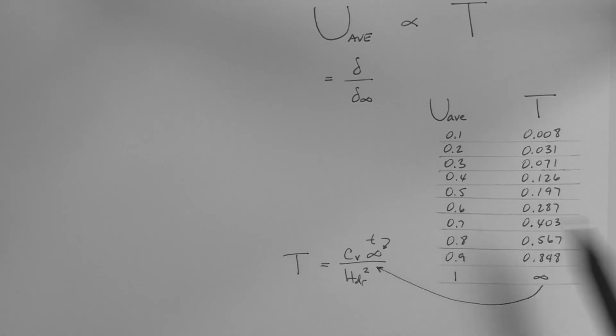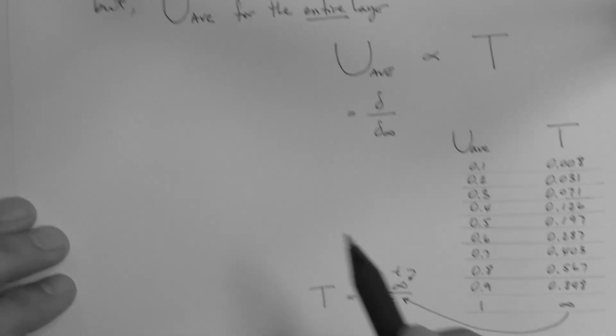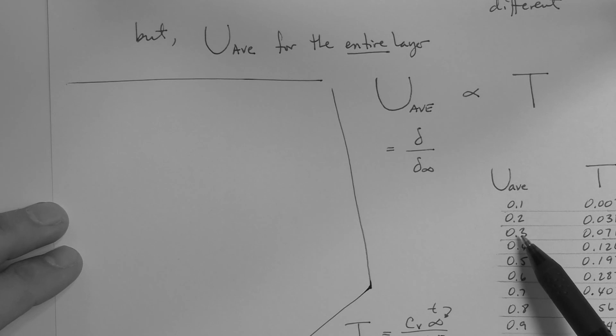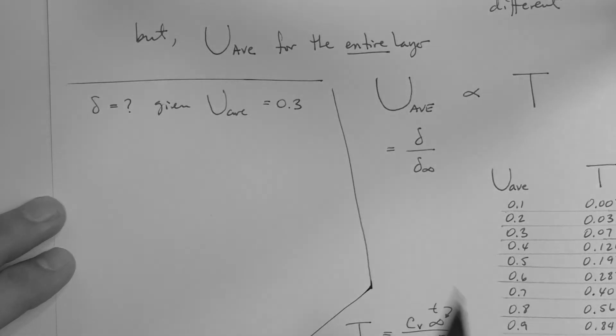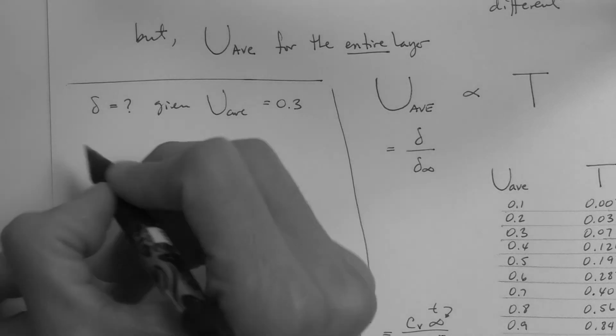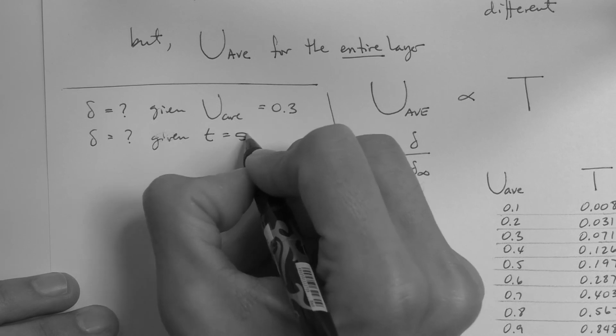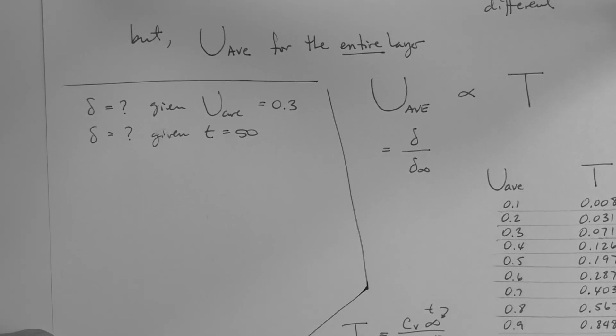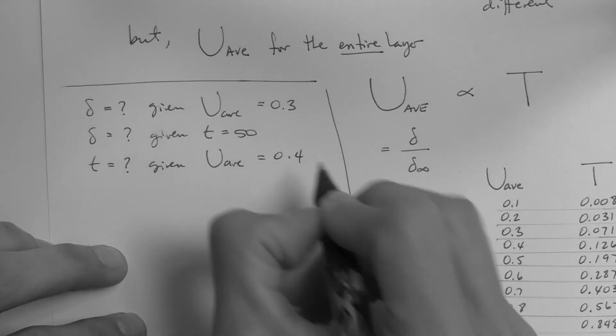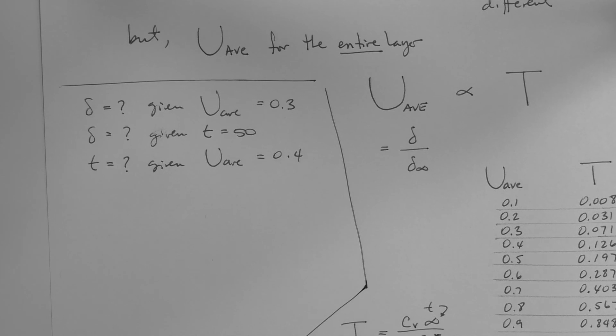We use these values to answer questions like the following. What is the settlement when the layer has consolidated 30%? What is the settlement 50 days after fill placement? How long does it take the layer to consolidate 40%? How long does it take the layer to settle 0.35 meters?